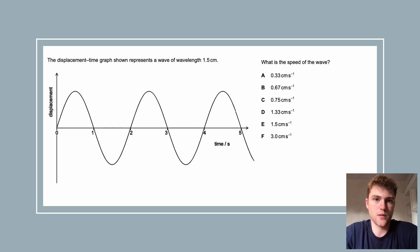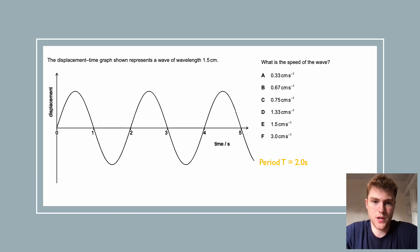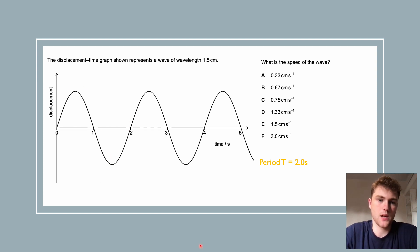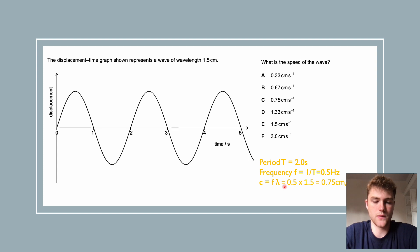Here's an example physics question: a displacement-time graph — what is the speed of the wave? The period is two seconds, as we can read from the graph. We find frequency as 1 over the time period, then use c = fλ, which is an equation you should know by heart for the NSAA. Working through, we get 0.75 centimetres per second, so the answer is C.